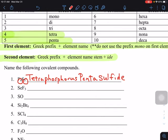And then we have three as a subscript on the fluorine, so that would become tri, because tri is three right here. Trifluoride.